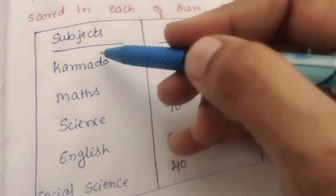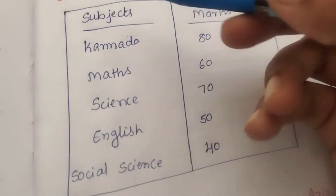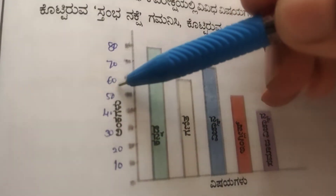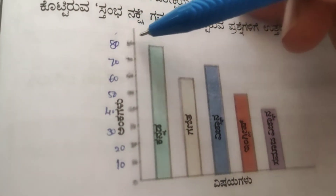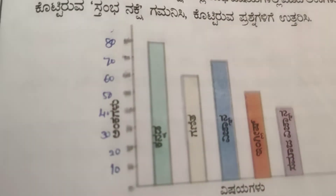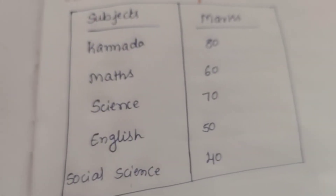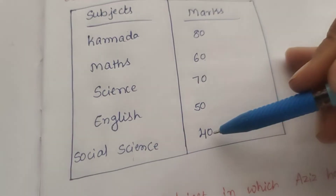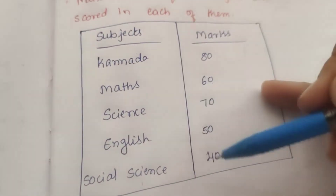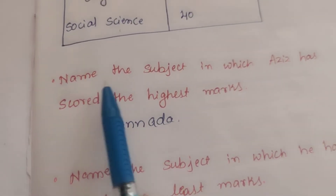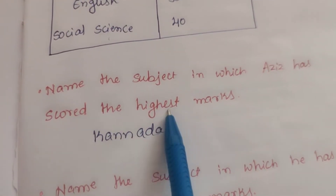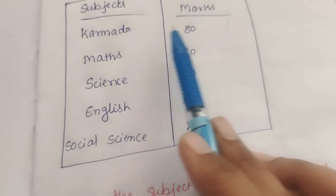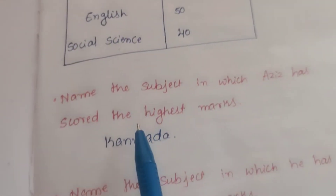The subjects listed are Maths, English, and Social Science. The scale is 10, 20, 30, 40, 50. Maths is 80, English is 60, Social Science is 70, and another subject is 50, then 40. So the subject with 40 marks is noted.